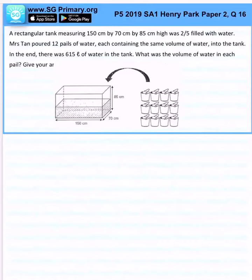A rectangular tank measuring 150 by 70 by 85 cm high was 2/5 filled with water. Mrs. Tan poured 12 pails of water, each containing the same volume of water, into the tank. At the end of the day there was 615 liters of water in the tank. What is the volume of water in each pail?